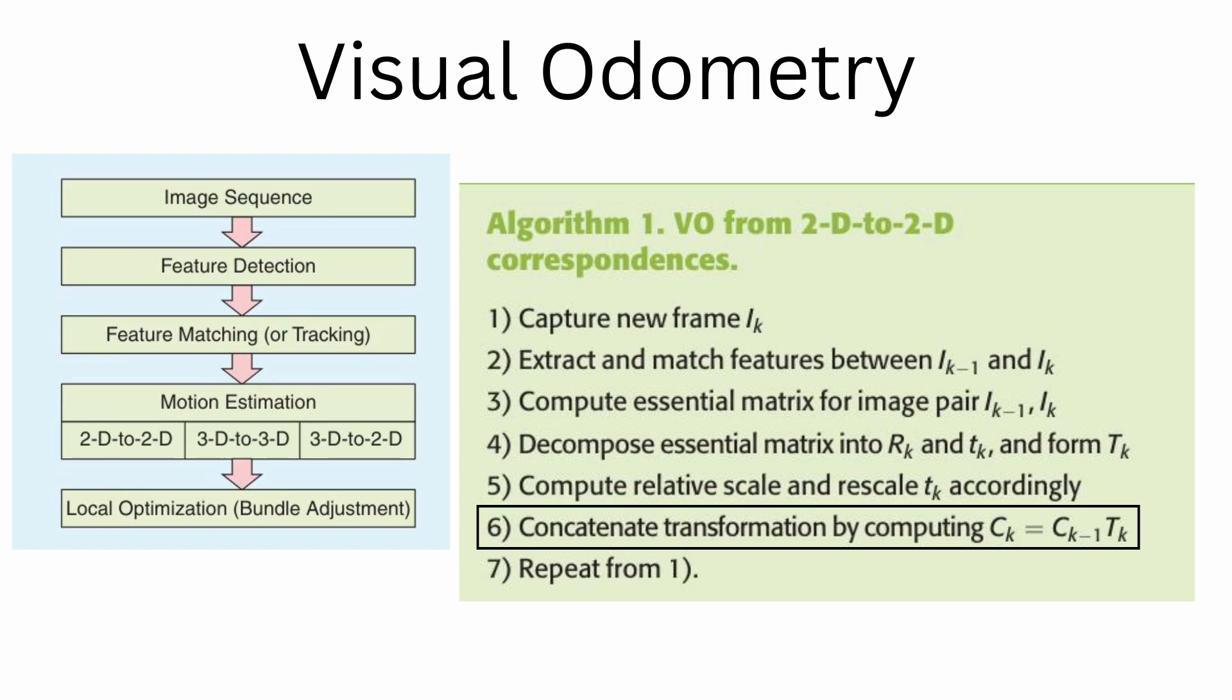And the last step, once you have T of K, you can just compute the current camera pose by multiplying the previous camera pose with T of K. That's it. And then you can incrementally do it for the next frame K plus one. So that is all the math behind it. Let me summarize this again before we move on to the next video and implement this.